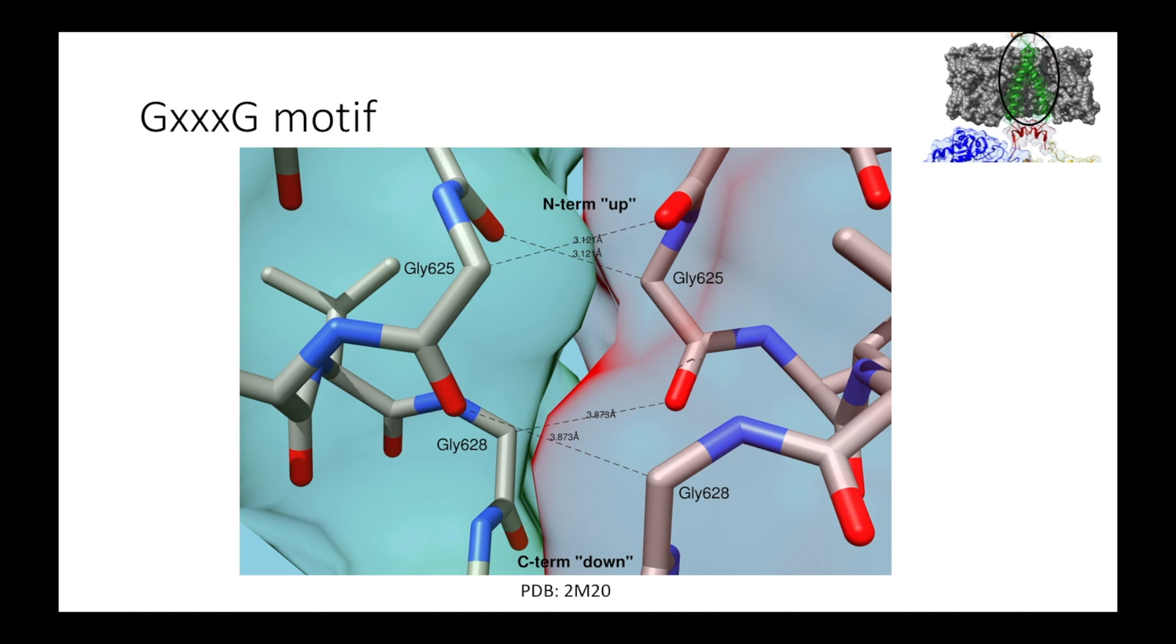The alpha carbons are somewhat electron deficient because of the surrounding amide groups, and so they can more easily donate a hydrogen to the electronegative H-bond receiver, especially in the hydrophobic environment of the membrane, where the dielectric constant has a lower value than in an aqueous environment.